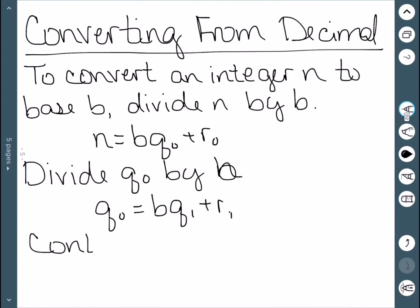And then essentially we want to continue until our quotient, which we'll say qm, is equal to 0. So essentially we just want to continue this process until we get a quotient of 0.